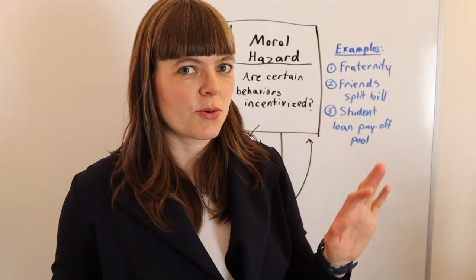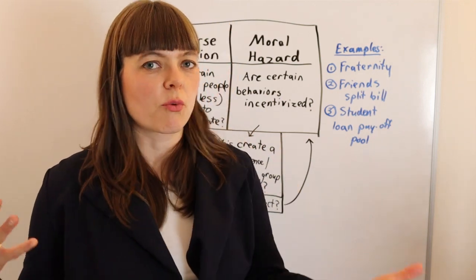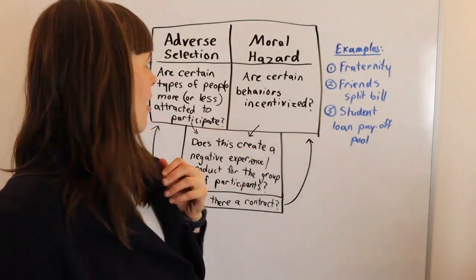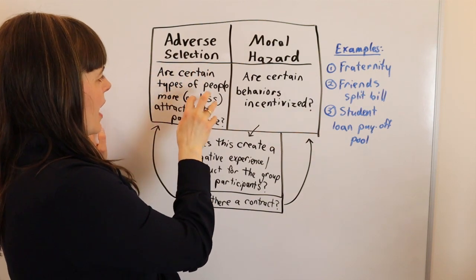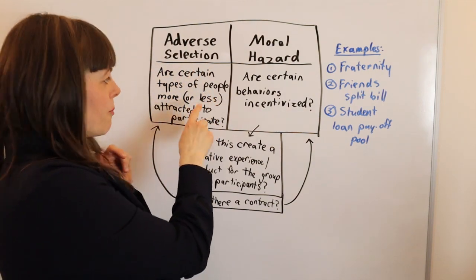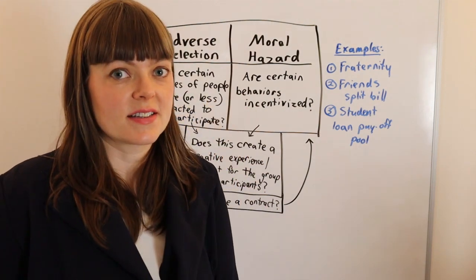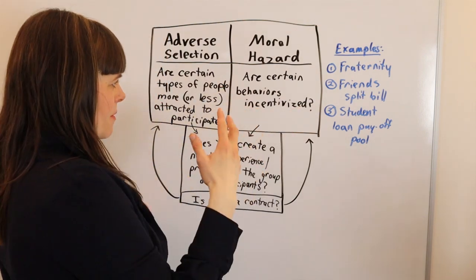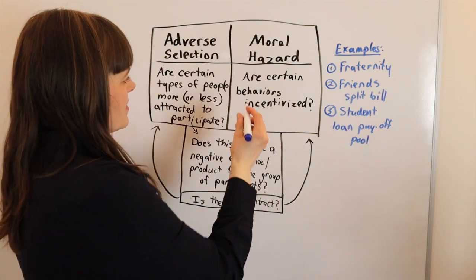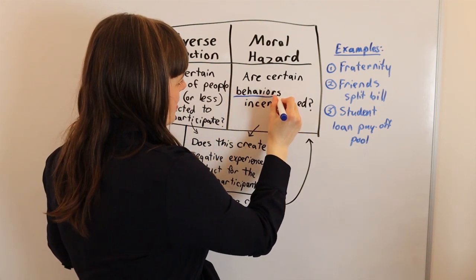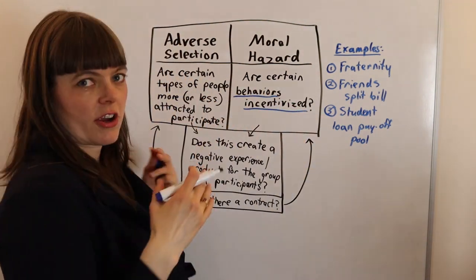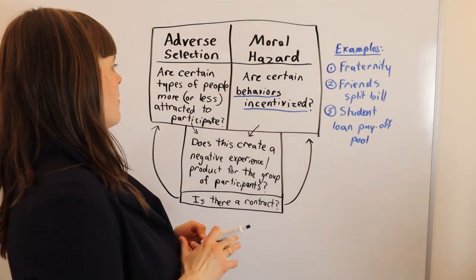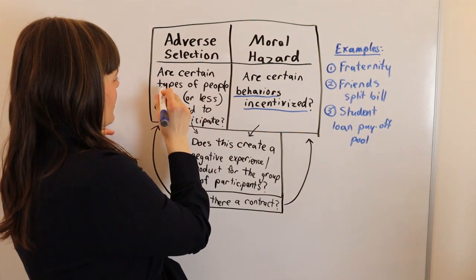So how do you know the difference between adverse selection and moral hazard? How do you know if one or the other of those is at play? With adverse selection, the biggest question is: are there certain types of people who are more or potentially less attracted to participate? With moral hazard, it's really about are there certain behaviors that are incentivized. Adverse selection is about the inherent type of person — they would be that type regardless of the situation. It's really about types.